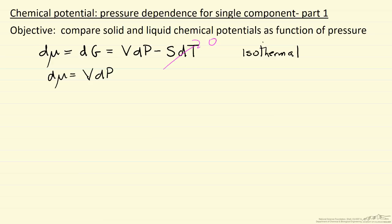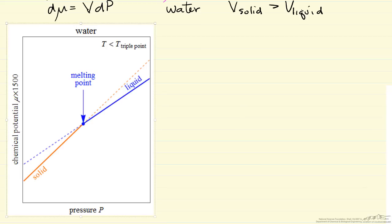We're going to start off looking at water, and the important thing is that the volume of the solid — namely solid ice — is greater than the volume of liquid water. So let's look at what this means in terms of a plot of chemical potential versus pressure. This is over a narrow pressure range, so chemical potential is approximately linear, which is a pretty good approximation since liquids and solids volumes don't change very much with pressure. The solid lines correspond to the stable phase — the lower chemical potential is what we have at equilibrium.